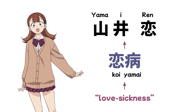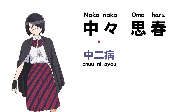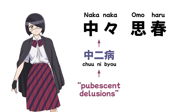Not everyone likes Yamai, least of all Nakanaka Omoharu. Nakanaka's last name references the phrase 'Chūnibyō,' where 'Naka' and 'Chū' are two different readings of the same kanji. Chūnibyō is a Japanese concept describing the delusions of grandeur some middle schoolers have during puberty. Nakanaka is very Chūnibyō, even though she's already in high school. Her first name, Omoharu, is a pun on 'Shishunki,' which uses the same kanji and means 'puberty.'